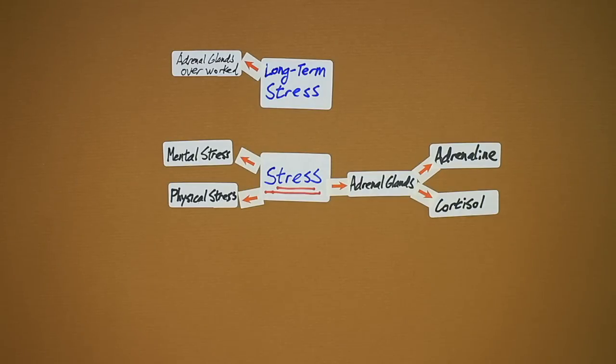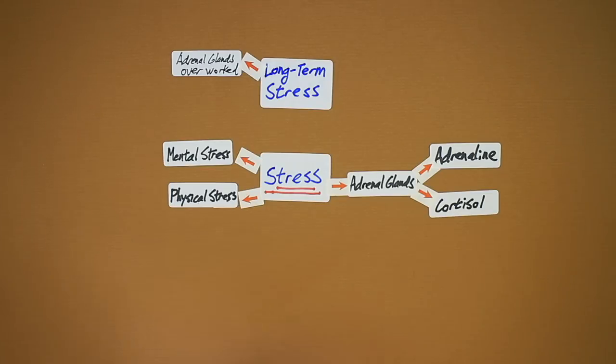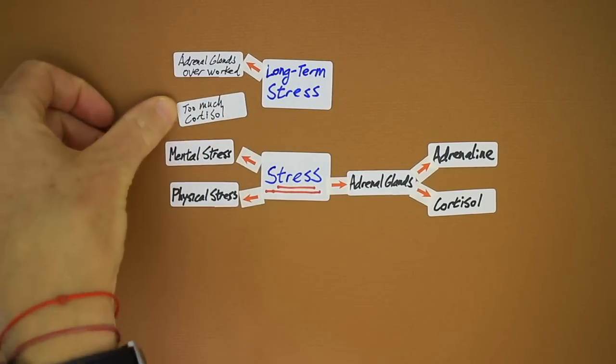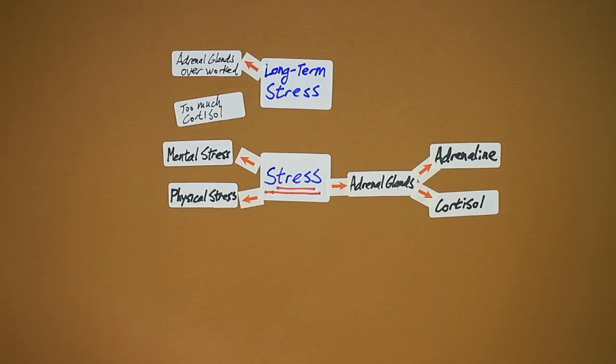But before the adrenal glands do tire out, they're in the position of always creating cortisol. When everything's working normally, cortisol levels should be at their highest in the morning, and then they should gradually decrease as we go throughout our day, their lowest point being in the evening when we're ready to sleep.